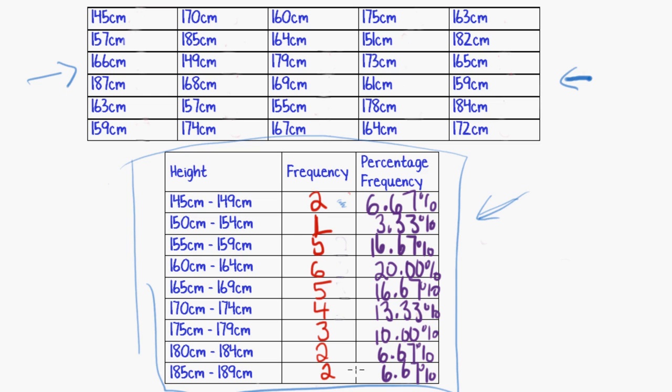If I said who was the tallest, again, I can't tell you. If I said how many times did the height 167 occur, you couldn't tell me. You know that there were five occurrences somewhere in the range 165 to 169, but I don't know exactly how many times 167 centimeters occurred, for example.